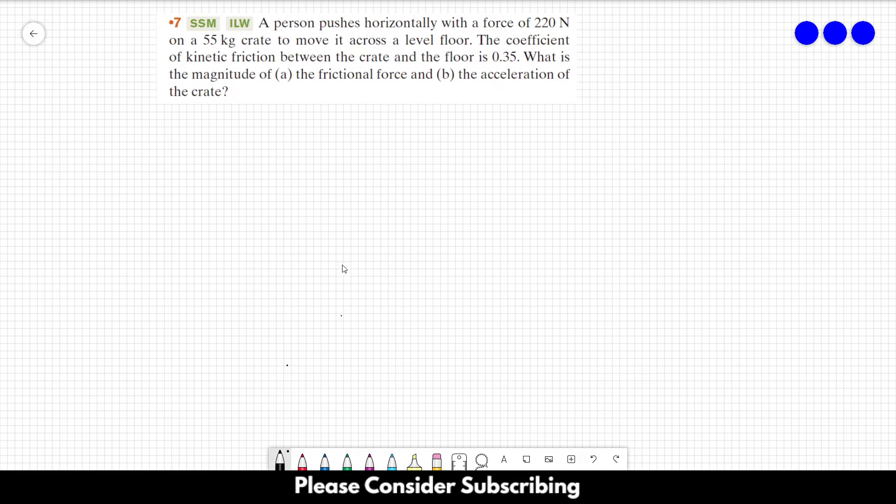Number 7. A person pushes horizontally with a force of 220 N on a 55 kg crate to move it across a level floor. The coefficient of kinetic friction between the crate and the floor is 0.35.